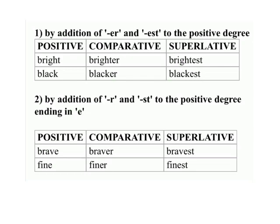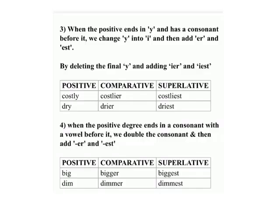Rule 2: For words ending in -e, we add -r and -st. Example: fine, finer, finest. Rule 3: When the positive ends in -y and has a consonant before it, we change -y to -i and then add -er and -est.